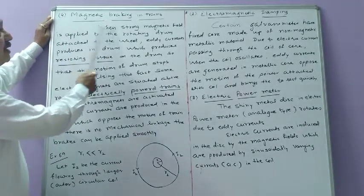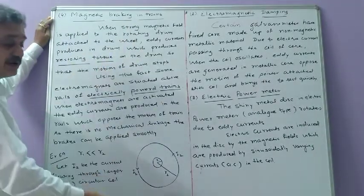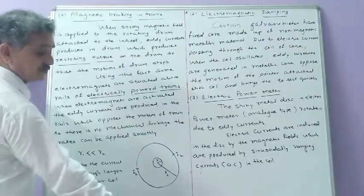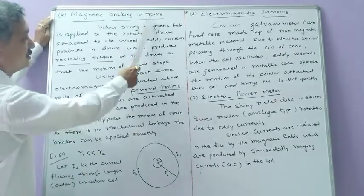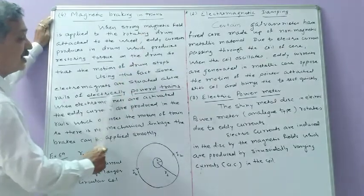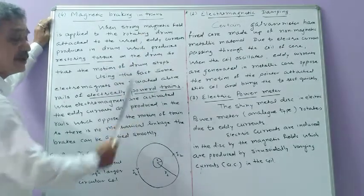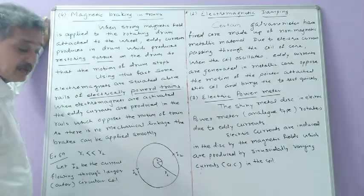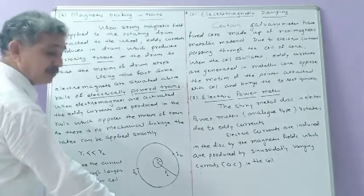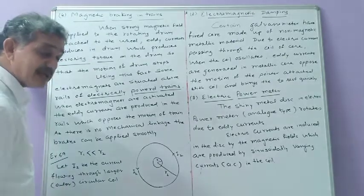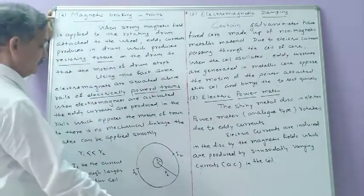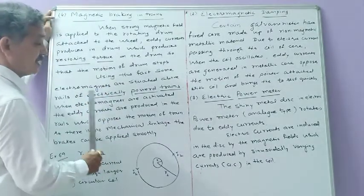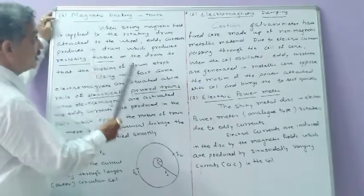The last and important application is magnetic braking in trains. Electrically powered trains — electric engine trains — can use a smooth braking system.